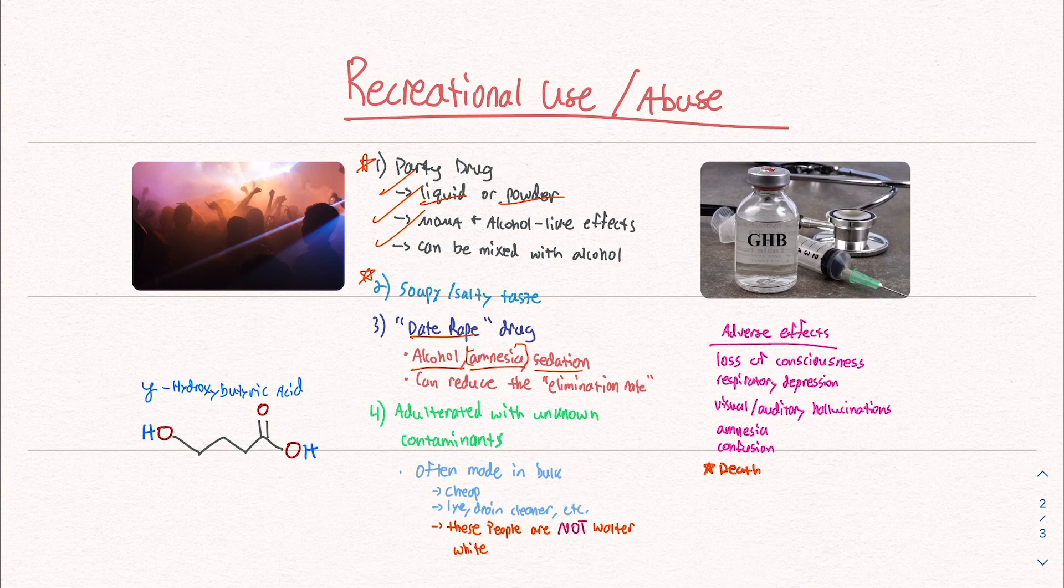If someone were to slip GHB in your drink, enough GHB would cause you to forget pretty much anything that happened that night. It's also important to know that GHB can reduce the elimination rate.